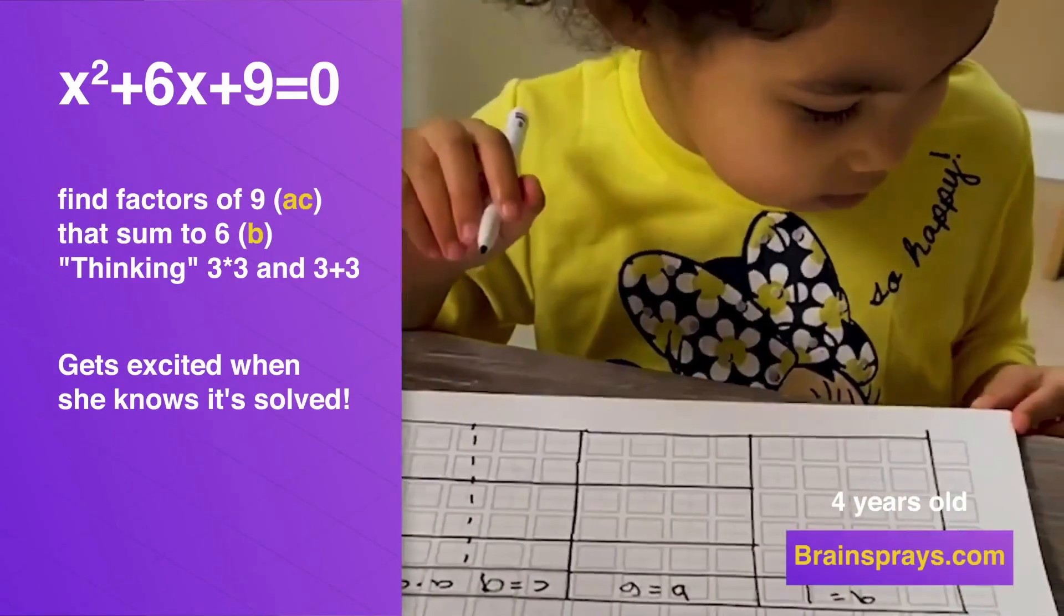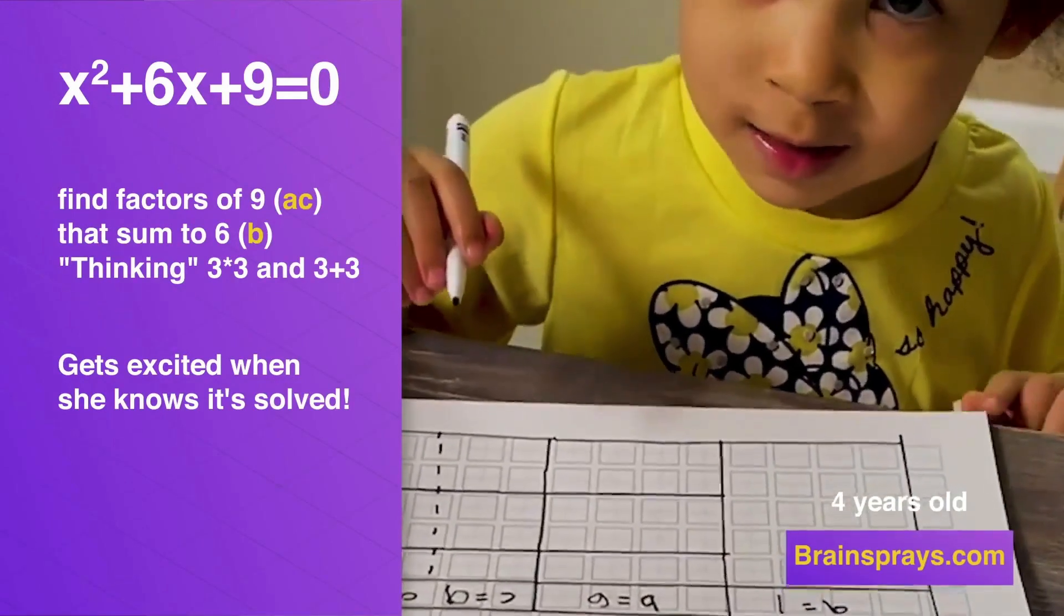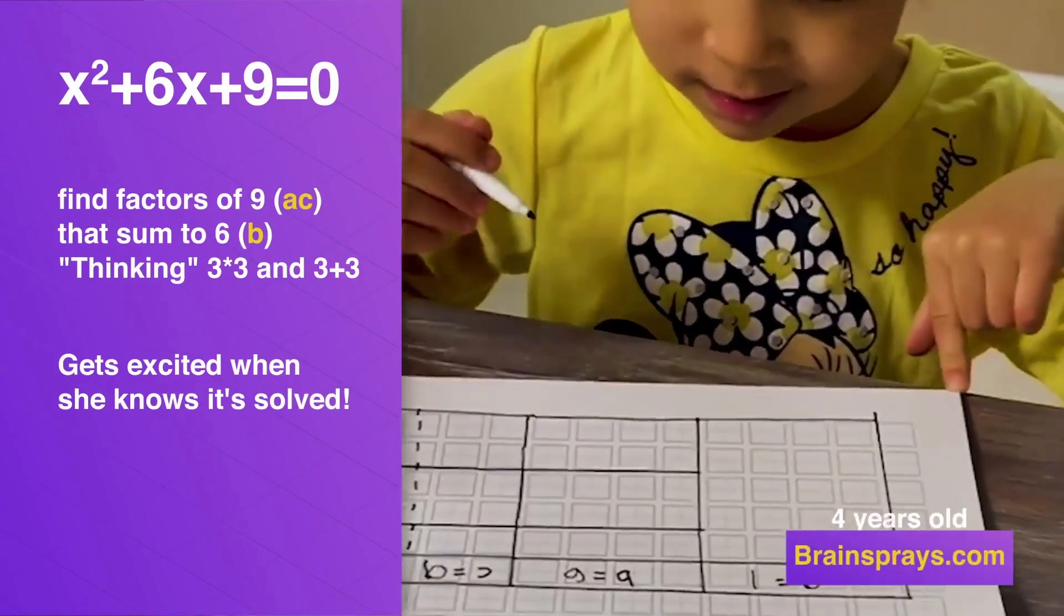Because 3, you know, 3 plus 3 is 6. Just write it down so you remember it. Because you still have more work to do. So write it down. 3, 3. Yeah? Yeah. Yep.